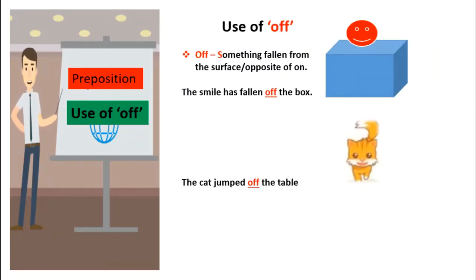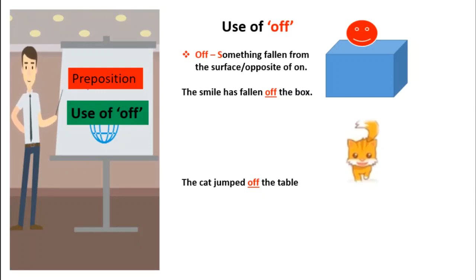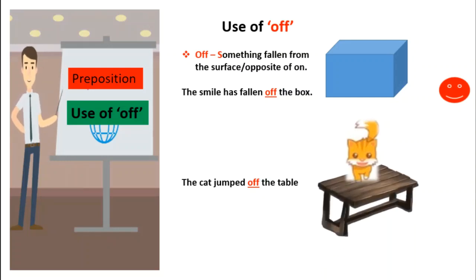Then the use of 'off'. 'Off' is the opposite of 'on'. When we keep something on the surface we use preposition 'on', but if something falls from the surface we use 'off'. Like, the smiley has fallen off the box. The cat jumped off the table.